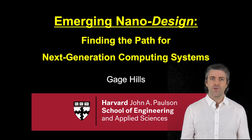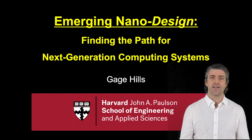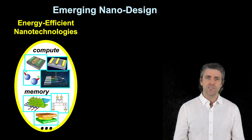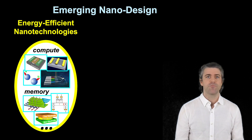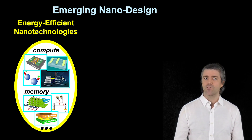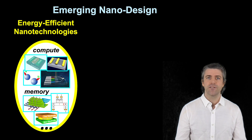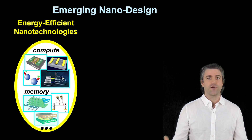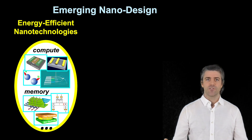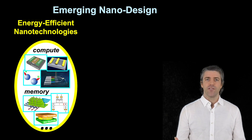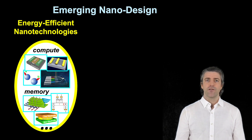In the Nano Design Group, we focus on the new area of emerging nano design. What is emerging nano design? Well, we start with a whole host of new and exciting nanotechnology options. These range from new materials like two-dimensional materials or one-dimensional materials, to new memories like resistive RAM or ferroelectrics, or new modalities like photonics and quantum and so on. But just building a new device is insufficient.